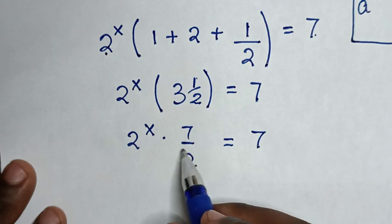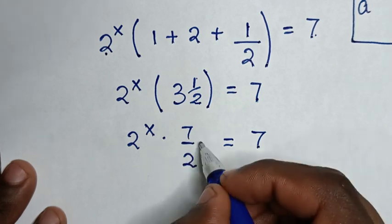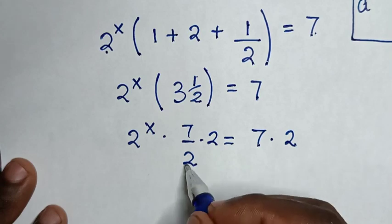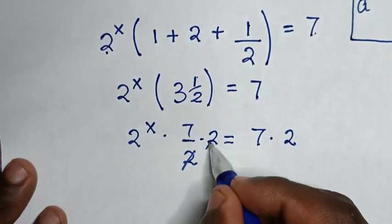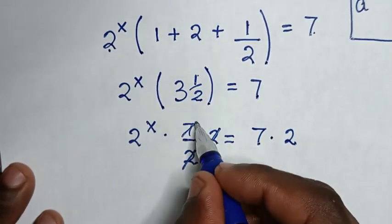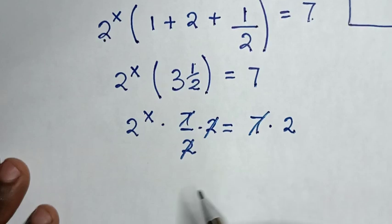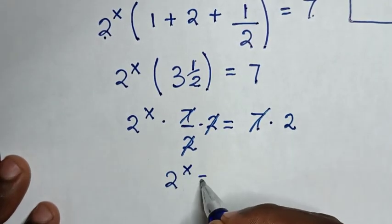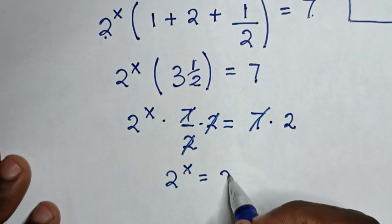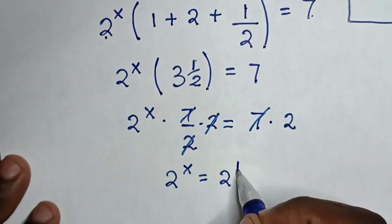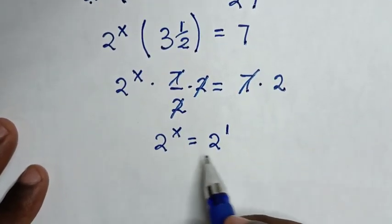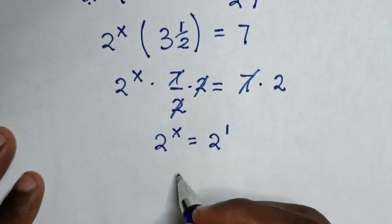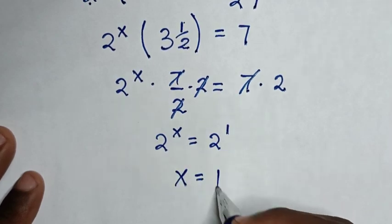Then to remove the denominator of 2, we will multiply by 2 on both sides. This 2 and this 2 will cancel, then this 7 and this 7 will cancel. So it will be 2 power of x is equal to 2, which is the same as 2 power of 1. Now we have the same base of 2, so we compare the powers. Therefore x is equal to 1. This is our final answer.